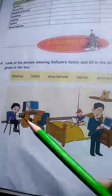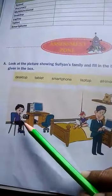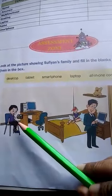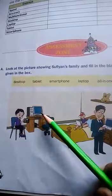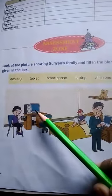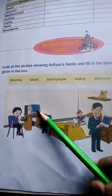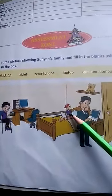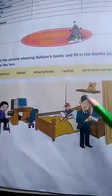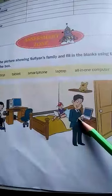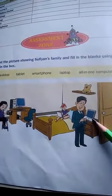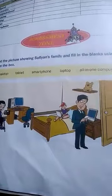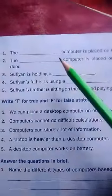Look at the picture. Here is Sufyan's family. We can see a desktop computer on the study table, a laptop, a smartphone, and on the bed table an all-in-one computer. Now we will solve and fill in the blanks.